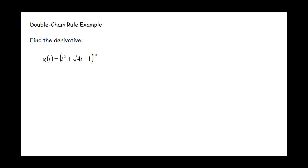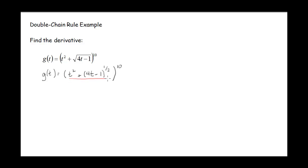Now let's look at one where we have multiple rules — this particular example is a double chain rule. Before taking the derivative, we rewrite: whenever we see roots, rewrite them as powers. So we have (t squared plus 4t minus 1) to the 1/2 power, all raised to the 10th power. Notice we have an inside function inside the parentheses, but also a second inside function: that 4t minus 1, which gives us another level in our chain rule.